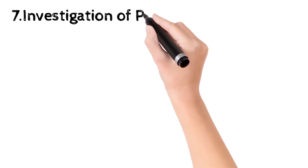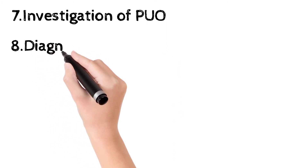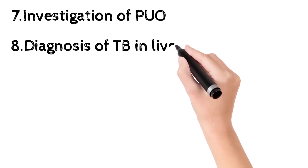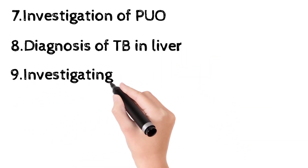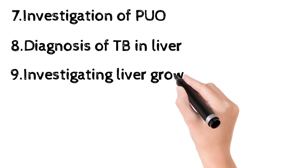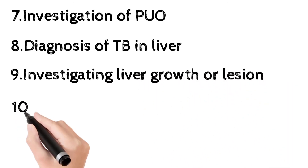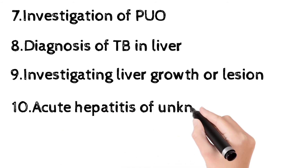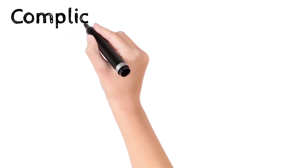The seventh indication is investigation of pyrexia of unknown origin. The eighth is diagnosis of tuberculosis of the liver, such as miliary tuberculosis. The ninth is investigating a liver growth or focal lesion. The tenth is acute hepatitis of unknown etiology — it is not performed for typical acute hepatitis.